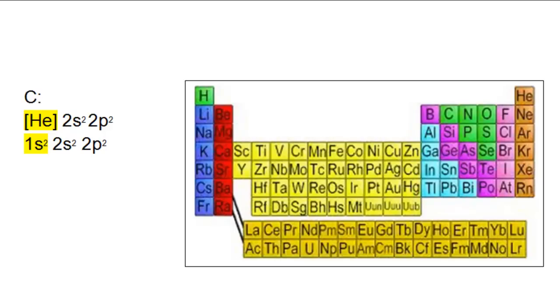To write a noble gas electron configuration, choose the atom you would like to write the electron configuration for, in this case carbon. Then locate the nearest preceding noble gas. In this case it was helium.